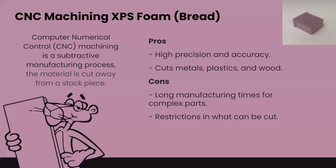CNC machining dates back to the 1940s or 50s. It's a subtractive manufacturing process, so material is cut away from a larger stock piece. In the top right you can see an example of a cut I made — that's the bread of our sandwich. CNC allows for very high precision in cutting out 2D and 2.5D shapes, in the sense that you're limited to what you can cut from the top down.